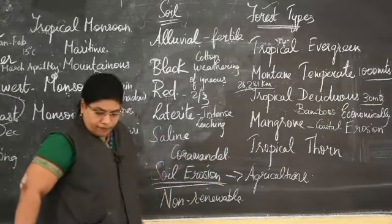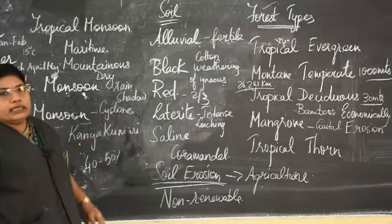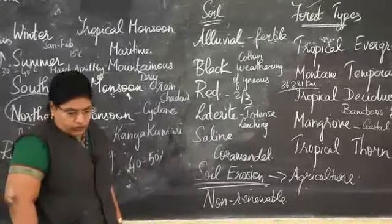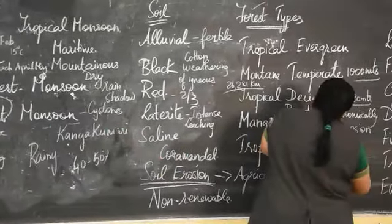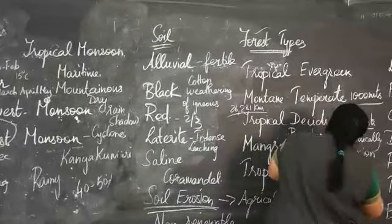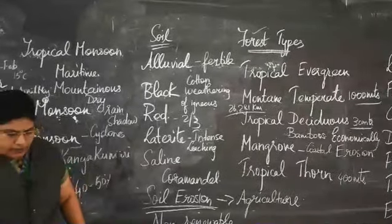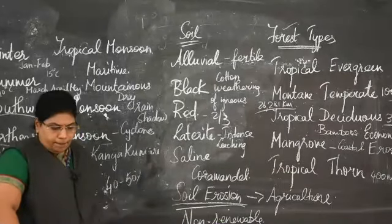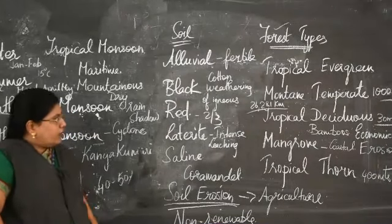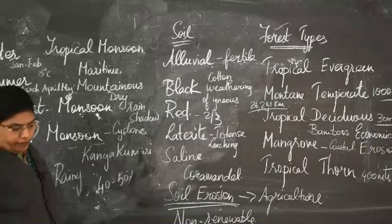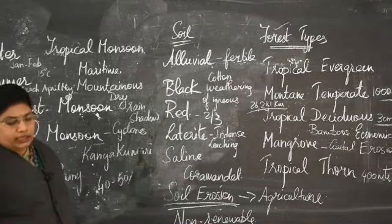The tropical thorn forest is found in places where there is very little rainfall, at an altitude of up to 400 meters. The common trees are acacia, neem, and palm. Shrubs are also found in the tropical thorn forest. These forests are found in the areas of Dharmapuri, Ramanathapuram, Virudhunagar, and some parts of interior Tamil Nadu.